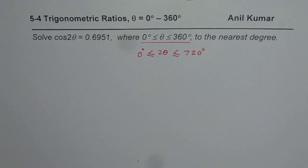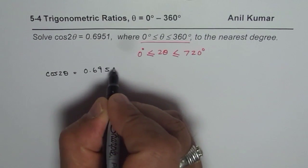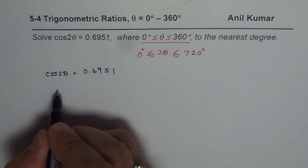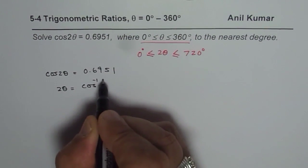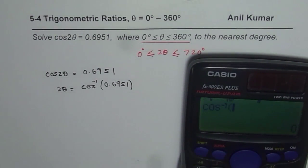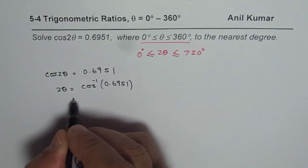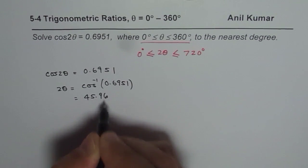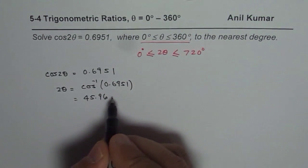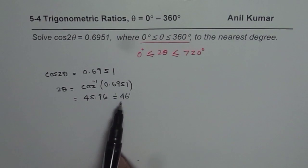Now let's begin to solve the question. Cosine of 2θ equals 0.6951. So that means 2θ equals cos inverse of 0.6951. Let's use the calculator and find: shift cos inverse 0.6951 equals 45.96, which is 46 degrees to the nearest degree. So the value of 2θ is 46 degrees.